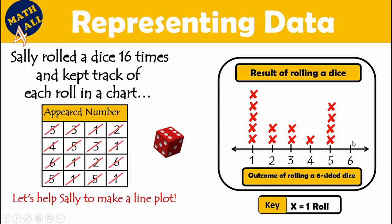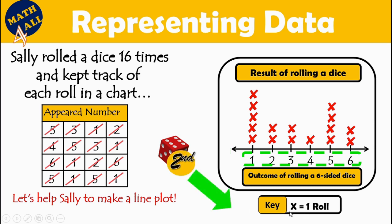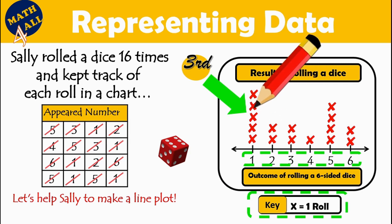Number 6: how many times did it appear? We have 1, 2 — just 2 times, so let's draw 2 X's: 1, 2. The first step is to look at the number line and the unit of measurement — we start from the smallest number to the biggest. The second step is to look at the key, which explains the value of X. Then you represent the data using X's on the number line.